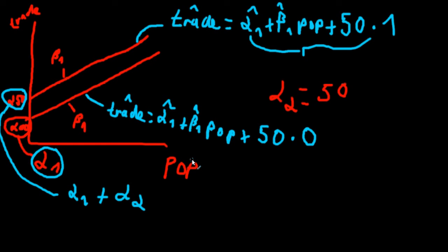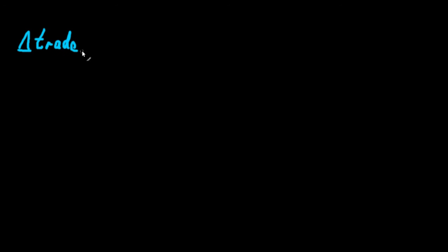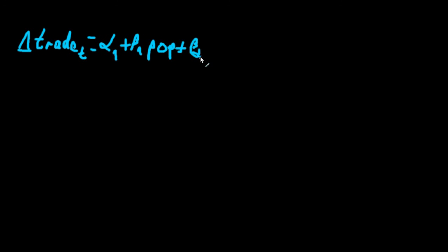Now how would that look in the time series regression context? I think seasonality is the best example for that. So let's say we model the volume of foreign trade of the United States over time. Since it's time series, let's use the change — or the first difference — of volume of foreign trade at time t. And let's use a more sophisticated model.